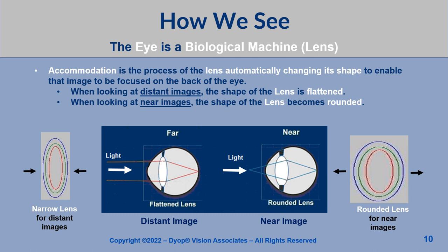Accommodation is the process of the lens automatically changing its shape to enable that image to be focused on the back of the eye. When looking at distant images, the shape of the lens is flattened. When looking at near images, the shape of the lens becomes rounded.